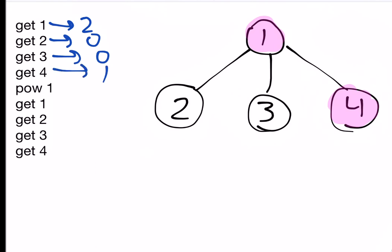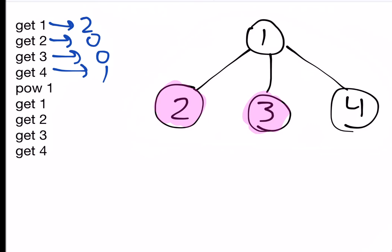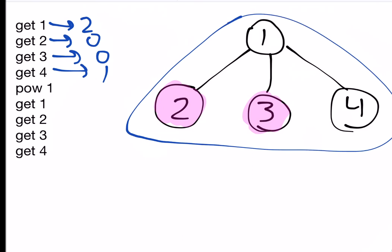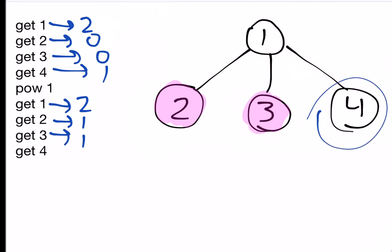The next query is PAU 1, which means we have to toggle everything in the subtree of node 1 — all the nodes. Node 1 is currently lit, so we make it not lit. Node 2 is not lit, so we make it lit. Node 3 is not lit, so we make it lit. Node 4 is lit, so we make it not lit. We don't print anything for PAU queries. Now when we query GET 1, there are 2 lit nodes, but they're now 2 and 3. For GET 2, there is 1 lit node. For GET 3, also 1 lit node. And for GET 4, there are 0 lit nodes.